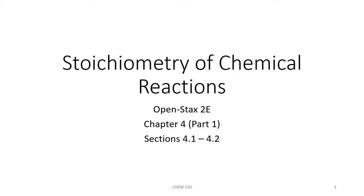Chapter 4 of your textbook is rather long, so we're going to break it up into two parts. Part 1 will cover sections 4.1 and 4.2, which is over different types of chemical reactions. There are many types of chemical reactions, but we're going to focus on two major types in this class: double replacement reactions and single replacement reactions. We'll talk about a few subcategories within each of those.